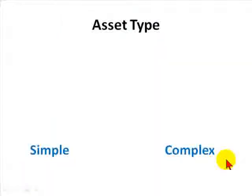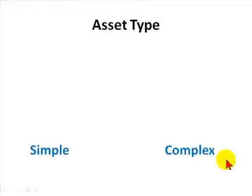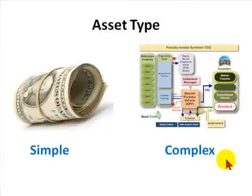Next is asset type, which refers to whether the asset is simple or complex. If the asset is simple, it is easy to value. A good example is a short-term U.S. Treasury — all else being equal, it is easier to liquidate because it is easy to price. At the other end of the spectrum, we have structured finance vehicles and asset-backed securities, like partially funded synthetic CDOs, that are more complex and harder to value.